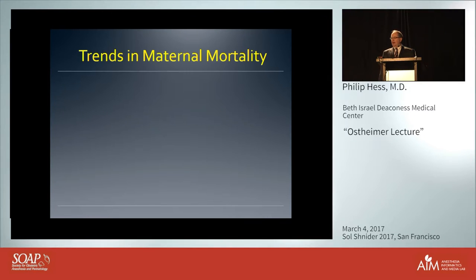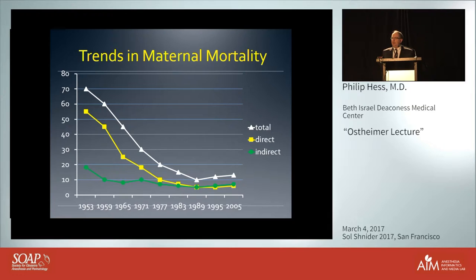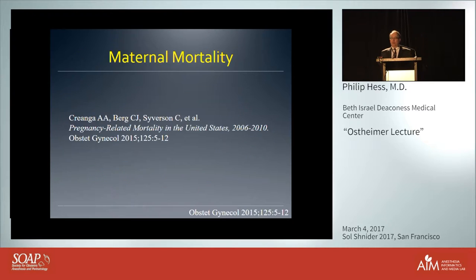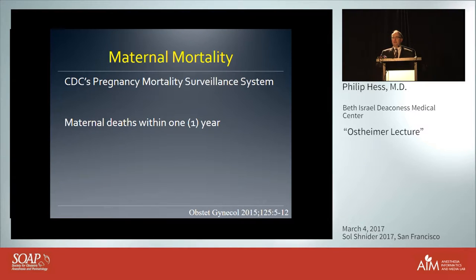Diving into maternal mortality and morbidity: the good news over the past 60 to 70 years was that maternal mortality had been going down consistently for all causes. But something happened in 1985 that was very concerning — maternal mortality started to go up, consistently since then, and no one understood why. I read with great interest this paper by Krienga looking at pregnancy-related mortality in the United States from 2006 to 2010, covering the CDC's Pregnancy Mortality Surveillance System.